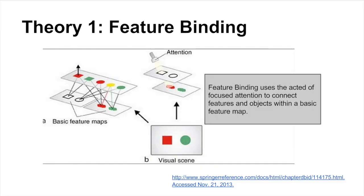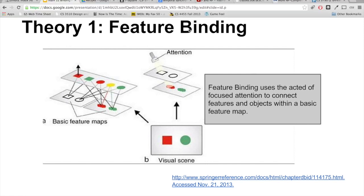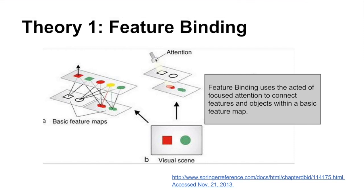According to the feature binding theory, what we see first is a set of free-floating features. So you open your eyes and you see just a bunch of shapes and colors and textures, but none of them are associated with a particular object. Not until we see here the active attention, which the analogy here is the flashlight. So when you focus on a particular object, this is the mechanism that pulls all the features together so you can see one coherent object.